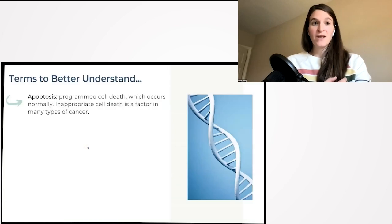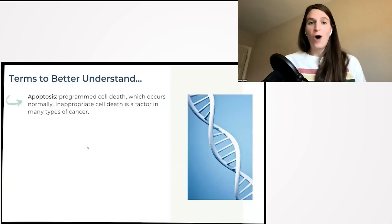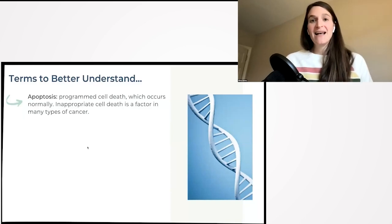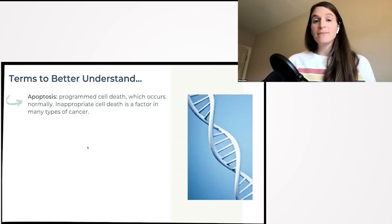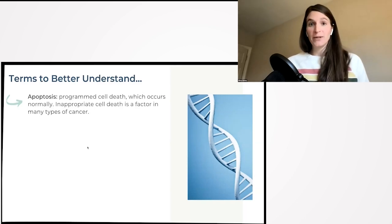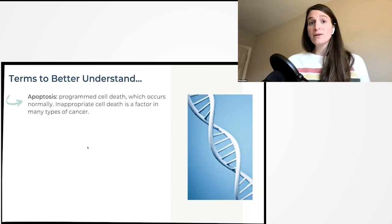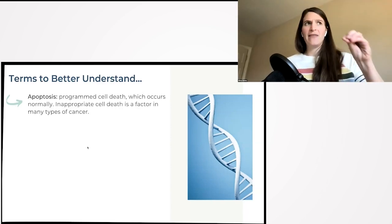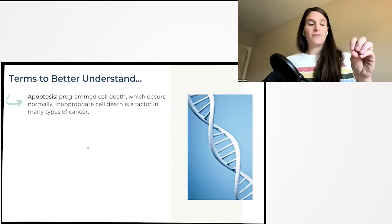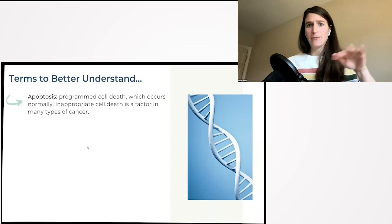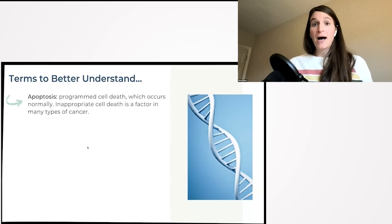I think there are some terms that are important to understand. One is apoptosis—defined as programmed cell death. This does occur normally in our body; in fact, we want it to occur normally and in a healthy manner. Apoptosis is your body saying, 'Hey, this is a bad cell, we need to get rid of it before it can continue to grow.' Let's say it's that normal cell that becomes damaged—apoptosis will say, 'Hey, this cell has damage, let's get rid of it before it can continue to replicate and divide.' If apoptosis is reduced and not happening appropriately, it can lead to many types of cancer or other diseases.